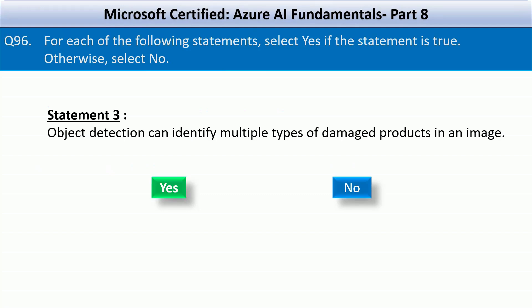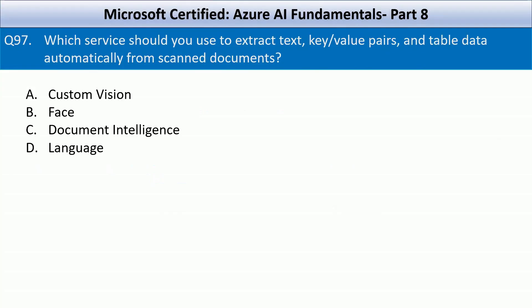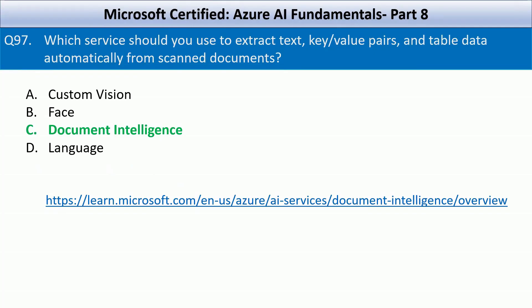Question number 97. Which service should you use to extract text, key-value pairs, and table data automatically from scanned documents? Your options are Custom Vision, Face, Document Intelligence, Language. Azure AI Document Intelligence is the right service for this use case. It uses AI models to understand the structure and content of documents, making it ideal for extracting text, detecting key-value pairs, extracting tables, and working with scanned documents, PDFs, and images.